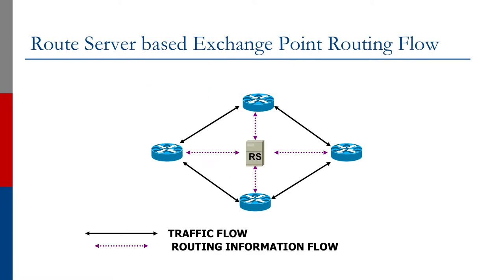The route server routing information flow is shown in this diagram. The route server is there to scale BGP. The traffic flow follows the solid arrows and the routing information flow follows the dotted arrows. A common misconception is that the route server is going to carry all the Exchange Point traffic as well — it doesn't. All it carries is the routing information shared between the various Exchange Point members. Traffic remains running directly between the connected routers over the Exchange Point Ethernet LAN and does not go anywhere near the route server.